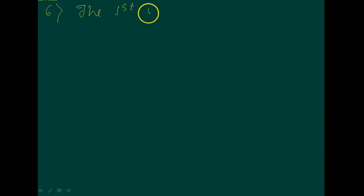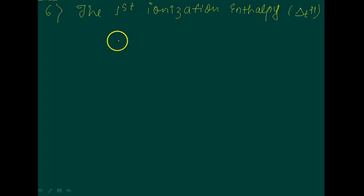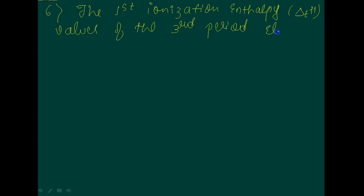Okay, next, can we start with the problem? I'm going to solve a problem based on ionization enthalpy. I will write the question here — it is the sixth problem. The first ionization enthalpy values of the third period elements, that is sodium, magnesium, and silicon, are...